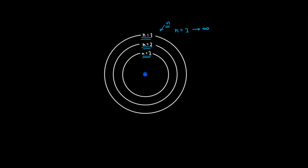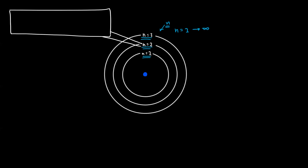Within this shell — let's say we draw our shell like this big box — and we're looking at the n equals two energy level. Within this energy level, we have something represented by the second quantum number, or the azimuthal quantum number, which is represented by l. l ranges in values from zero to n minus one, and l tells us the shape of the orbital. This is what we call the subshell.